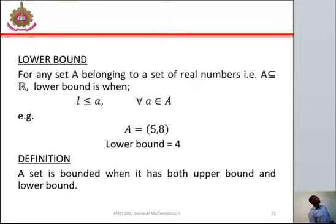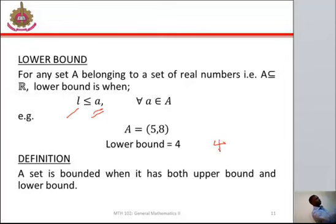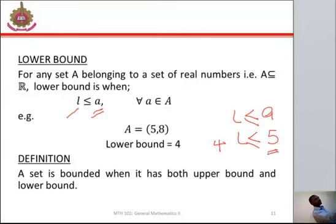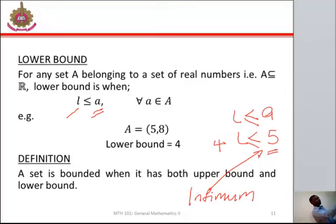For lower bound, for any set A belonging to a set of real numbers, lower bound is when the small letter L, representing the lower bound, is less than or equal to A, where A is a member of real number. Like the example shown earlier, the lower bound is going to be 4. You might be wondering why not 5 — where A is contained in this set and A is 5. We said A is less than or equal to 5. In this case, we call 5 the infimum, which is the greatest lower bound on a set. The lower bound itself is 4.